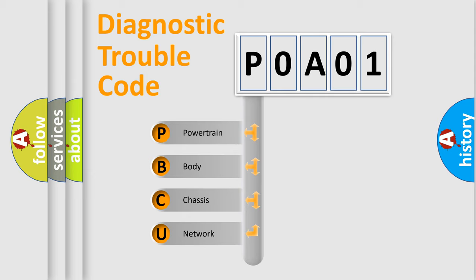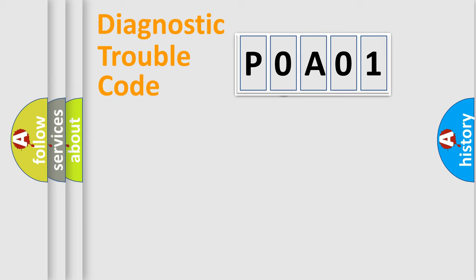We divide the electric system of automobile into four basic units: Powertrain, Body, Chassis, and Network. This distribution is defined in the first character code.